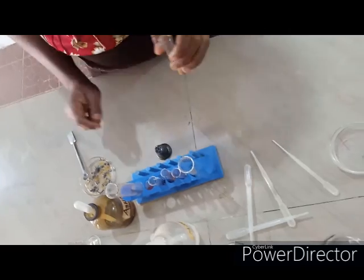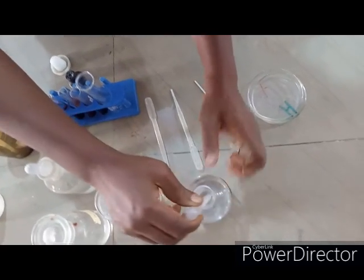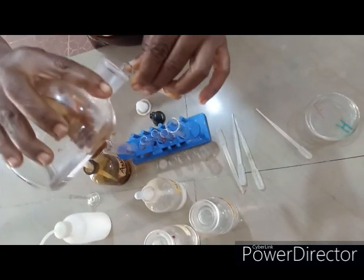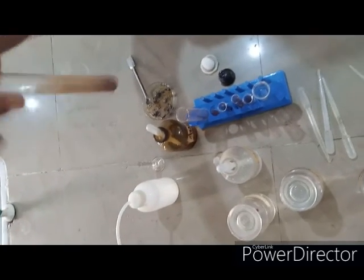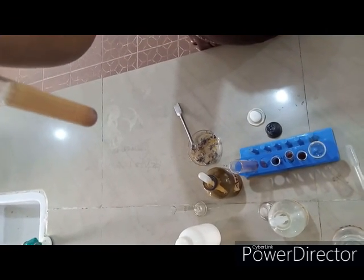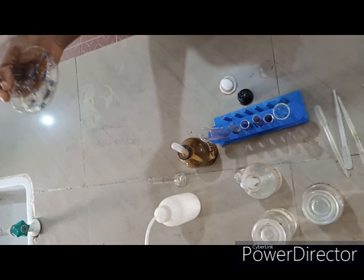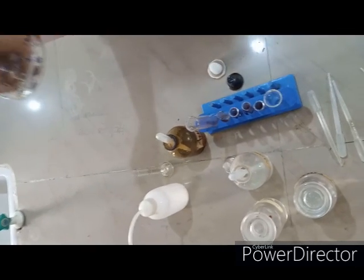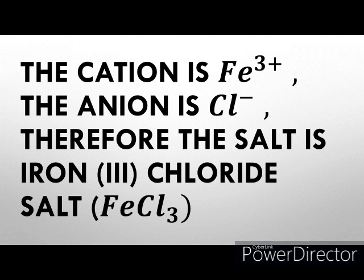Let's confirm which particular anion is present by adding trioxo nitrate 5 acid solution. Shake the solution to see whether Cl minus is present or trioxo carbonate 4 ion. As you can see, the white precipitate is still there. The inference is that Cl minus is present and not CO3 2 minus — if it were CO3 2 minus, the precipitate would have dissolved with effervescence. So iron 3 plus has been confirmed and chloride ion has been confirmed. When you interchange the valency, it gives you iron 3 chloride. The salt we've just analyzed is iron 3 chloride.